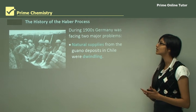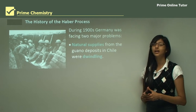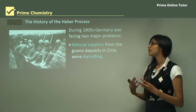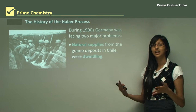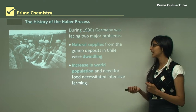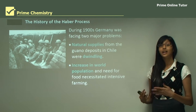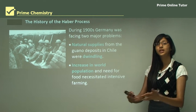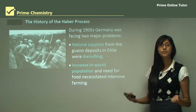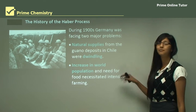During the 1900s Germany was facing two major problems. The first was that natural supplies from guano deposits in Chile were dwindling, and Germany was highly dependent on overseas supplies for its production of ammonia, fertilizers, and explosives. The second problem was the increase in world population and the need for food, which necessitated intensive farming and required a lot more fertilizer to produce more crops.